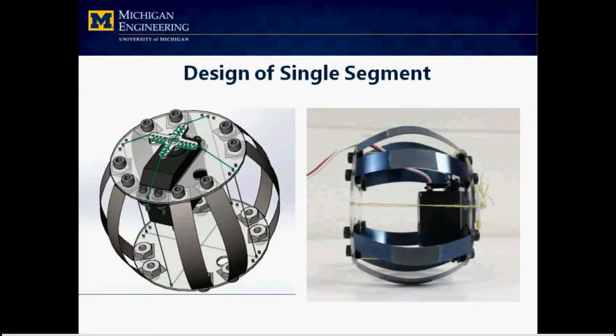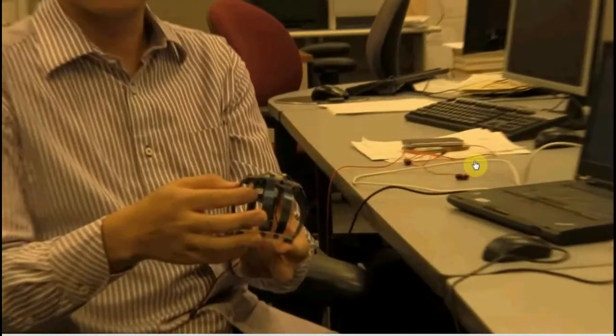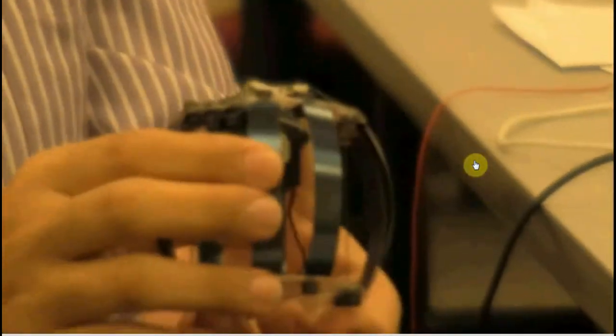Here is a SolidWorks model and photo of a single segment. Here is one segment of the prototype. It is composed of one servomotor, eight spring steel strips,